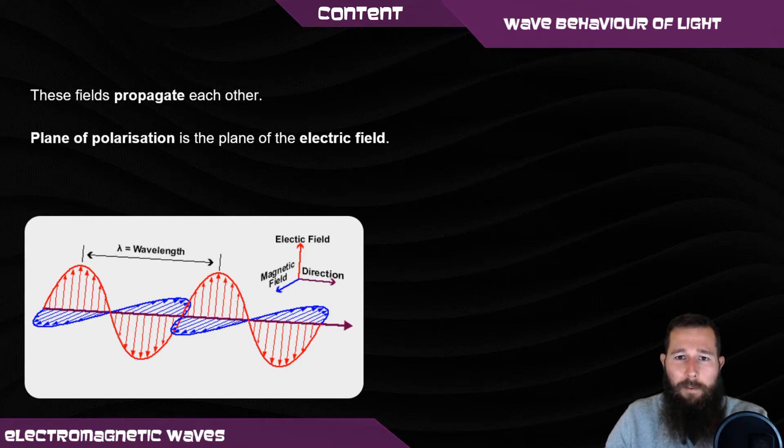As a definition, plane of polarization of an electromagnetic field is the plane of the electric field. So in this diagram on the screen, the plane will be the plane of the page or the plane of the screen, looking at the red electric field.